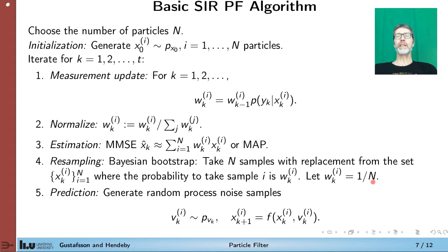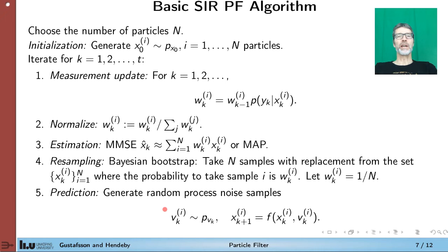After resampling, we let all the weights be equal to 1/N. This step needs to be done — perhaps not every iteration but regularly — to avoid depletion, where one trajectory gets all the weight (w = 1) while all others become numerically close to zero. Then comes the time update, which is very simple: take a realization of the process noise from its distribution, plug it into the state space model together with the corresponding particle, and get a new particle at time k+1.